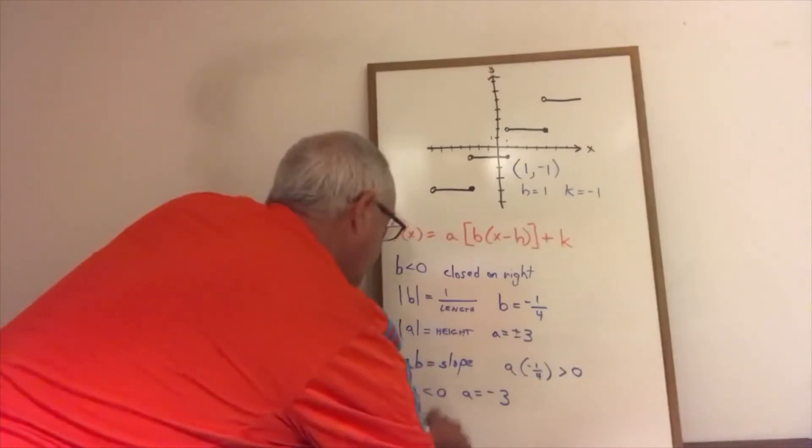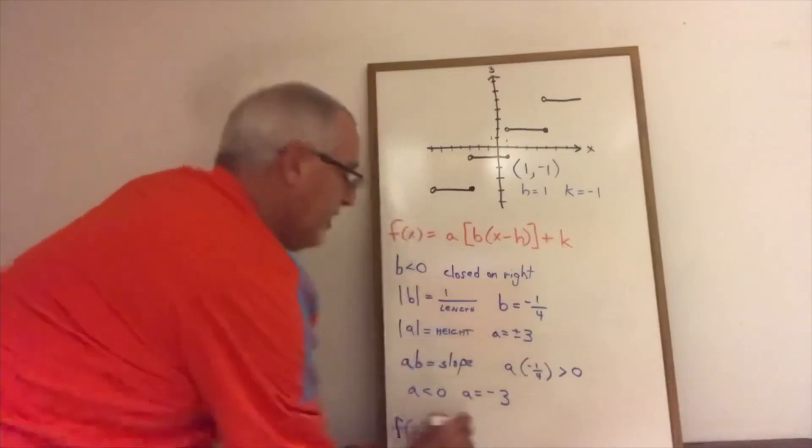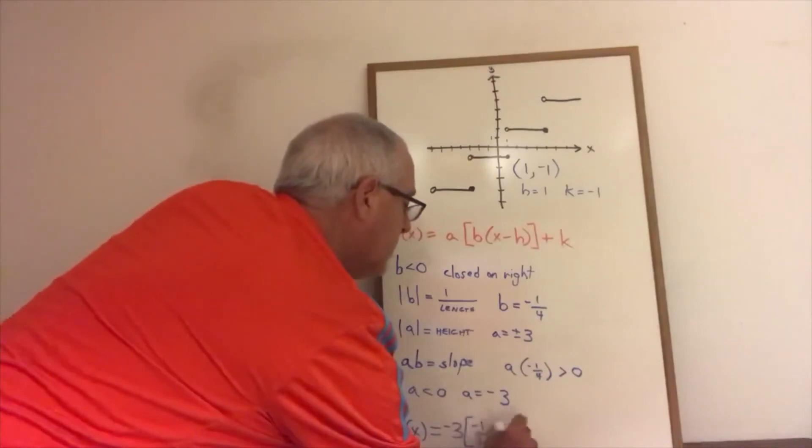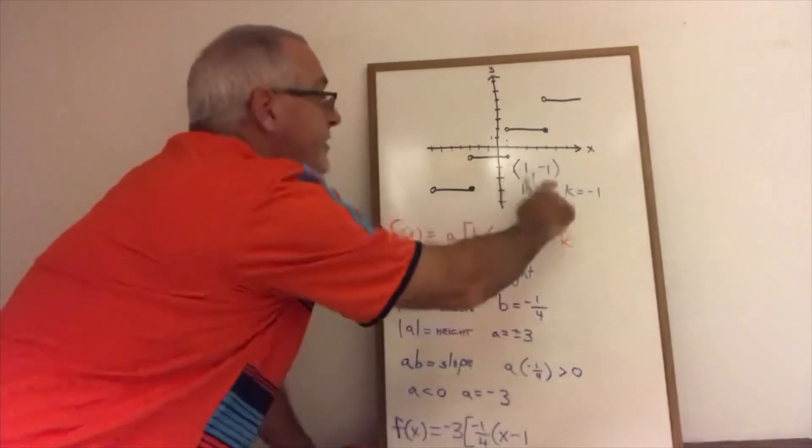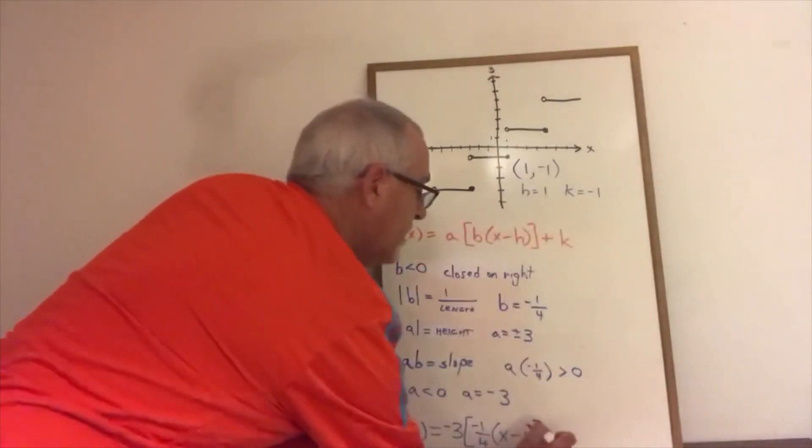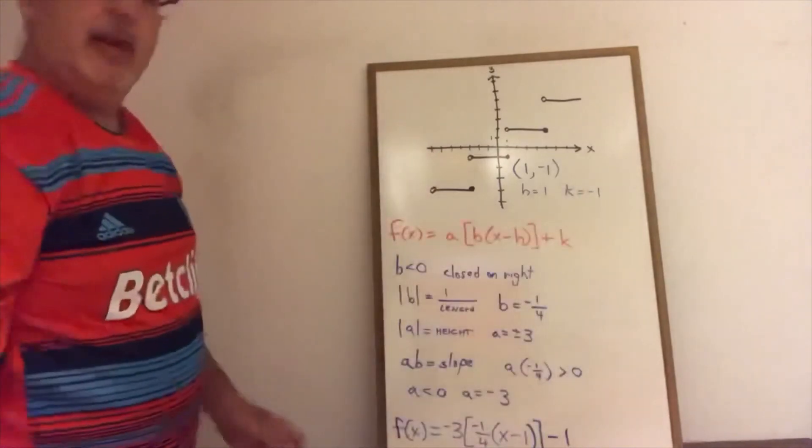f(x) is equal to negative 3. We open our square bracket. B is negative 1/4, times x minus 1, close the square bracket, minus 1 because k is equal to negative 1.